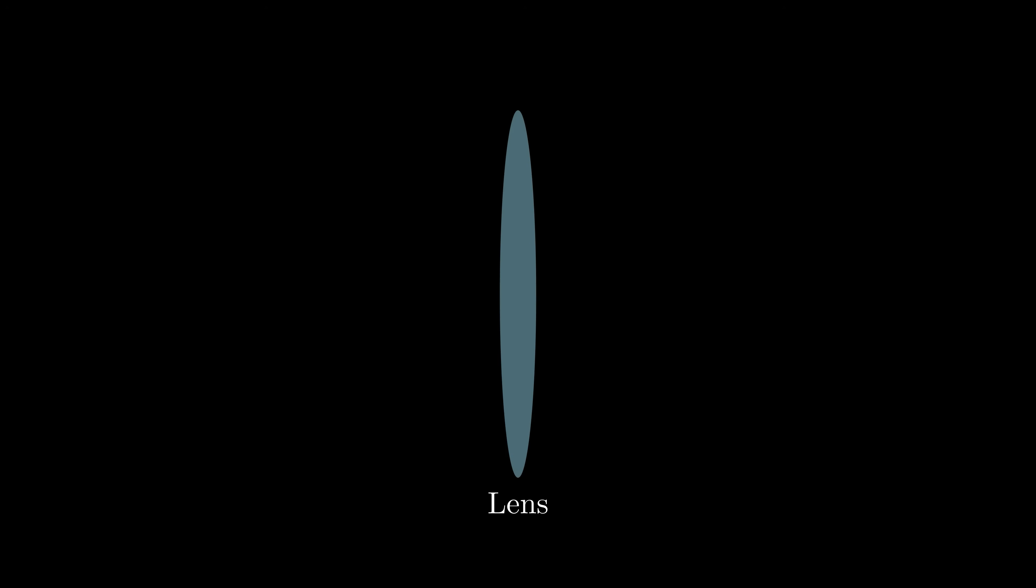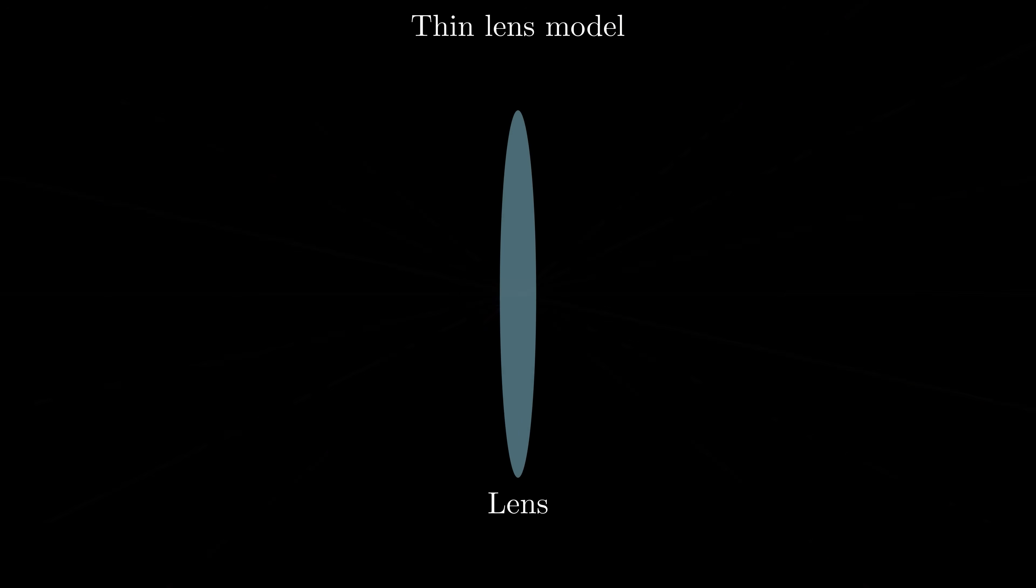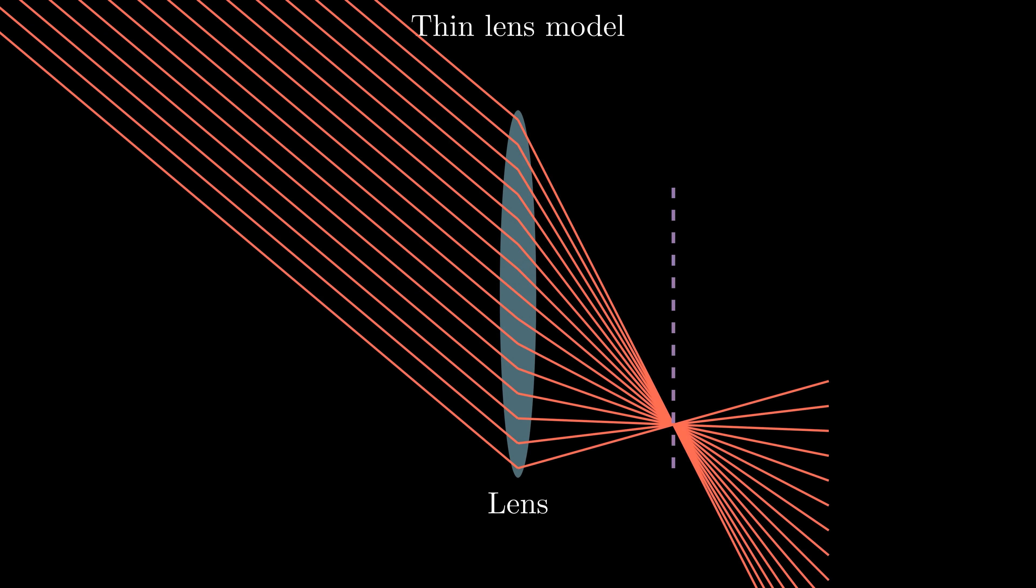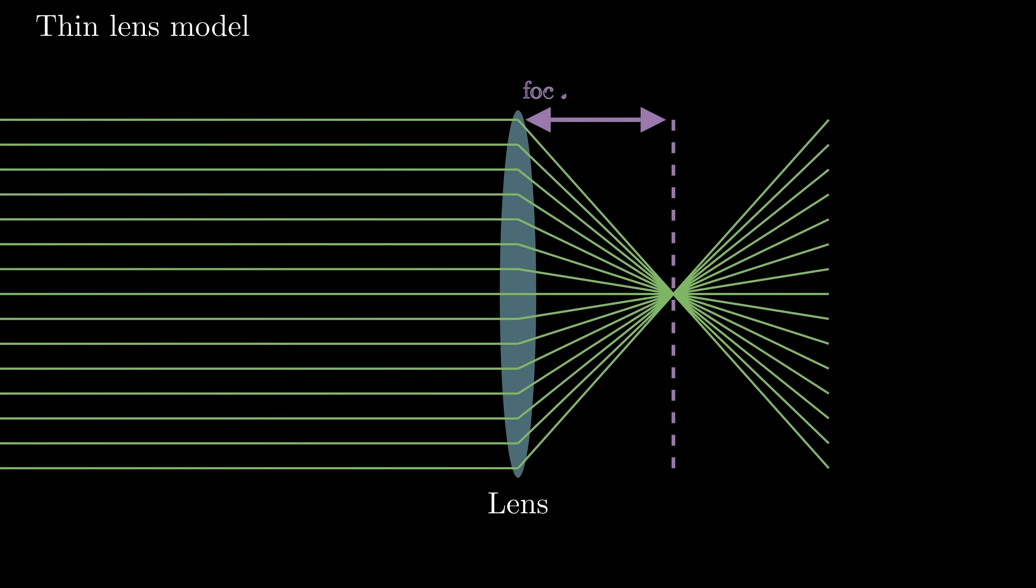But how do lenses actually form an image? Let's explore this with a simplified model. Here we assume the lens is extremely thin compared to its diameter. This allows us to simplify our analysis and ignore the complexities introduced by thick multi-element lenses. There are two key properties. First, any light rays that pass through the center of a thin lens continues in a straight line. Second, parallel rays converge to a single point located at the focal plane. The distance between the lens center and the focal plane is the focal length.